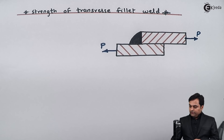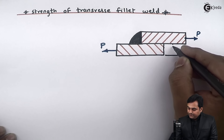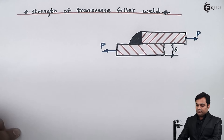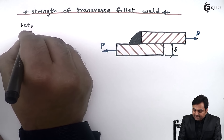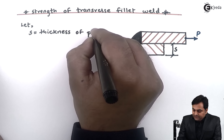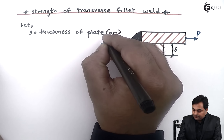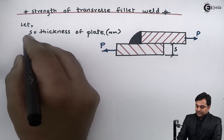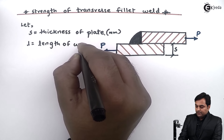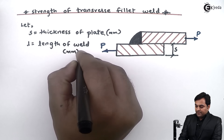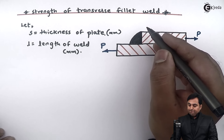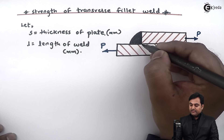For this joint, we need to know how much load it can resist — that is the strength of transverse fillet weld, or its load carrying capacity. I'll assume that the thickness of the plate is S. Let S be the thickness of the plate in mm, and let L be the length of weld in mm.